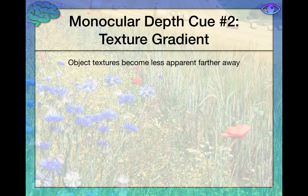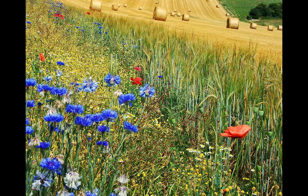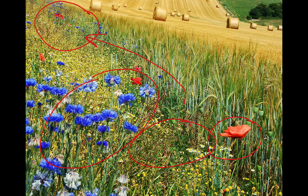Next, we have texture gradient. Object textures become less apparent farther away; up close, object textures are very apparent. Focus your attention on the flowers and grass that are very close — look at how detailed everything is, how much texture, and how clear and well-defined the boundaries between objects are. Now focus further out on the plants and grass over there. Look at how everything blends together and a lot of the detail is lost. Your brain takes this into account: the further out it's looking, the fewer textures it can see, and it uses this information to judge depth.